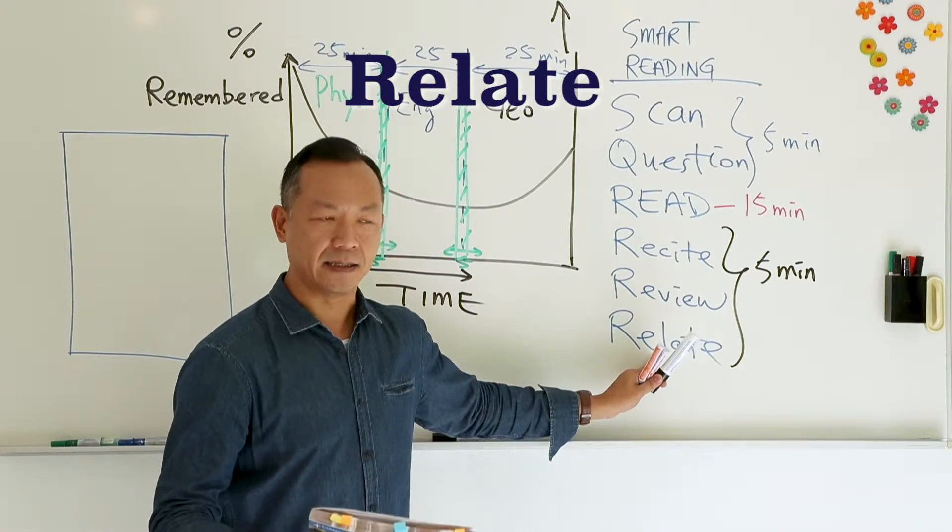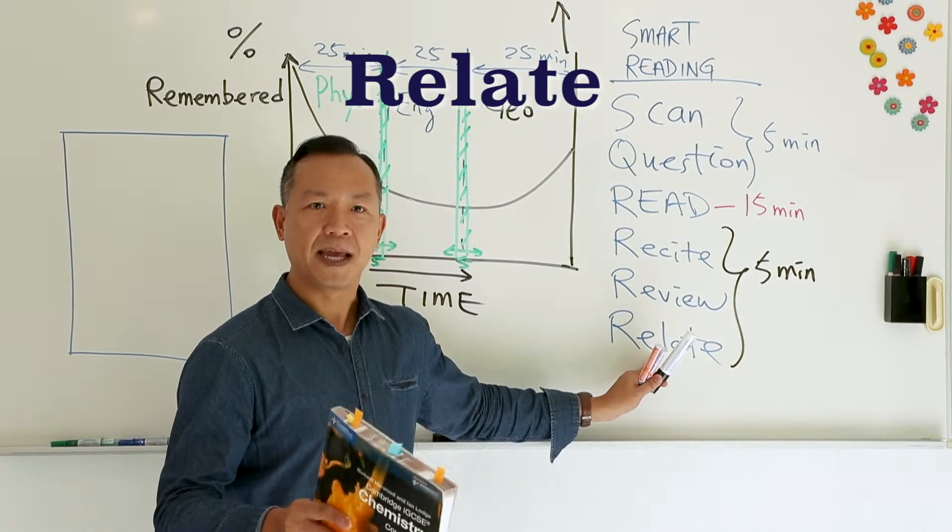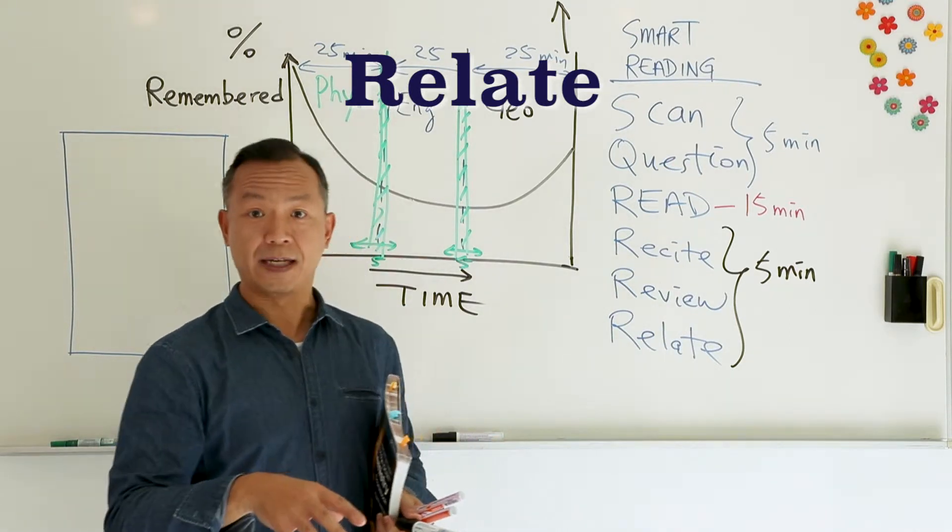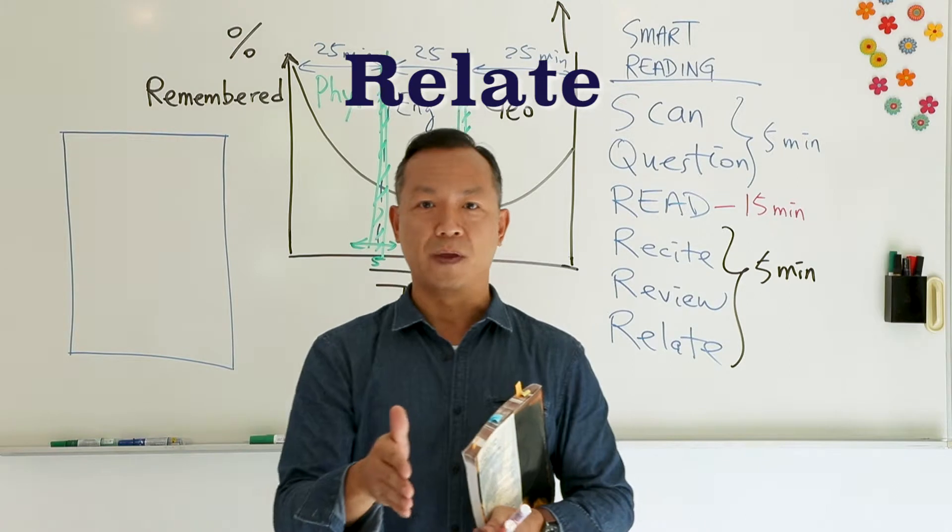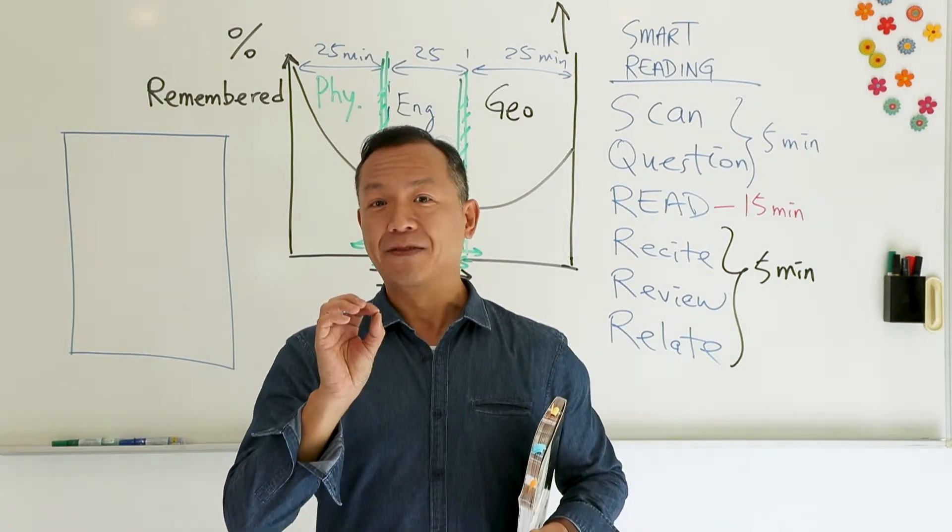When you do that, it's really cool because the brain requires forgetting in order to learn something. The last step, relate. That means apply. I remember now, that's how the teacher was explaining in class. Or you can relate to everyday life - how acid reacts with alkaline. This is the process of reading smart.